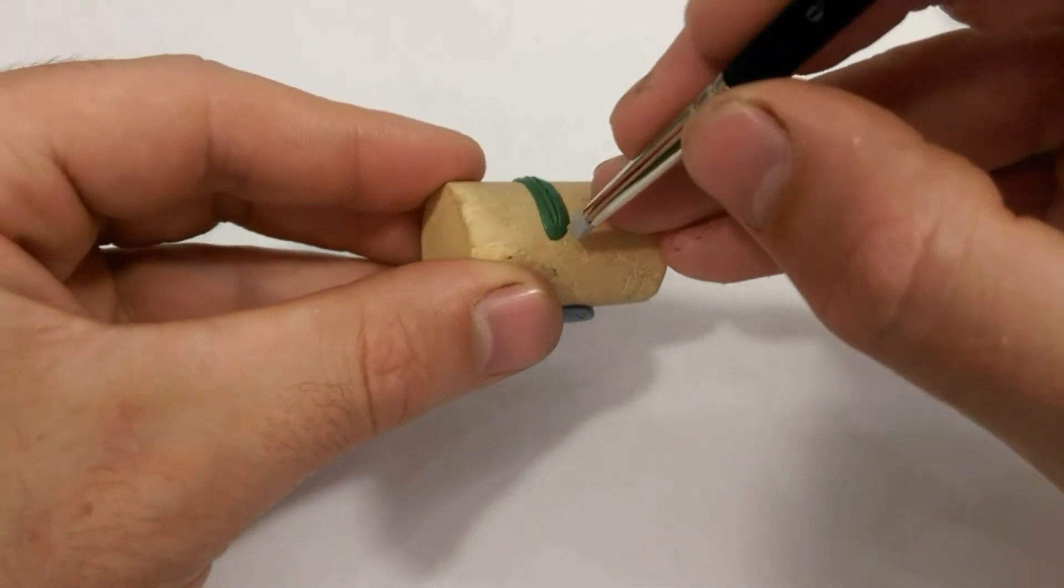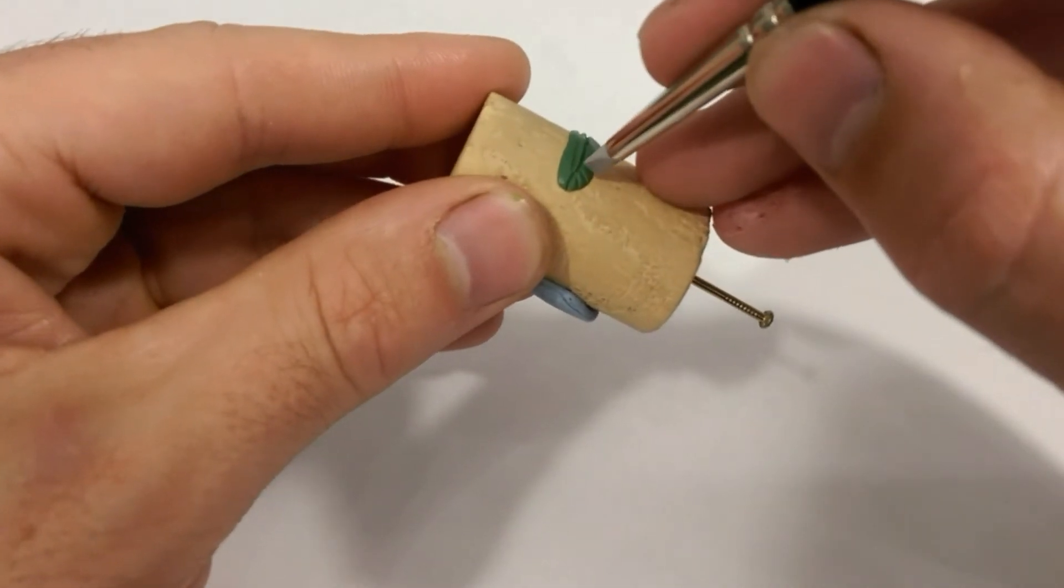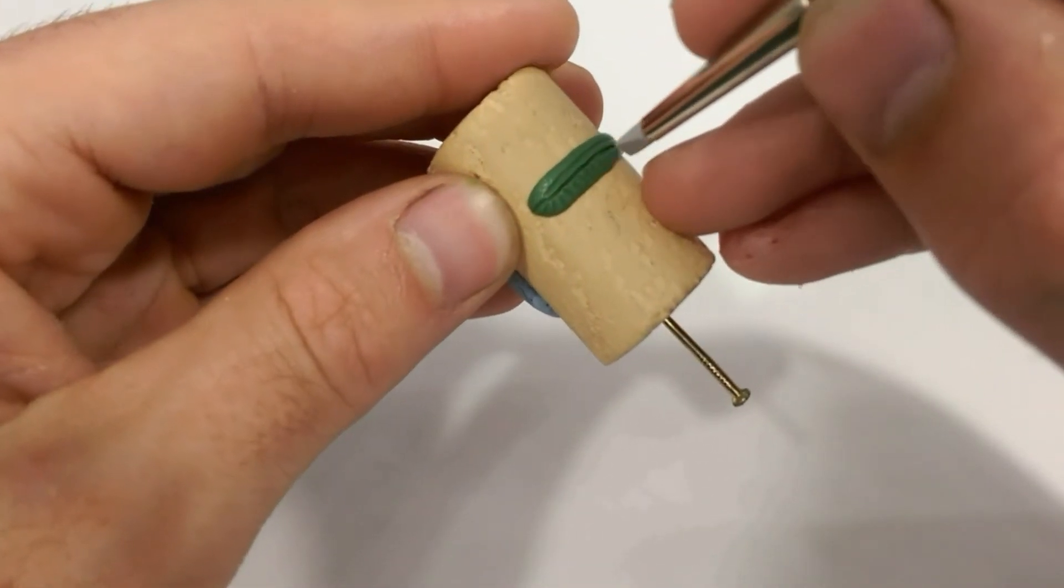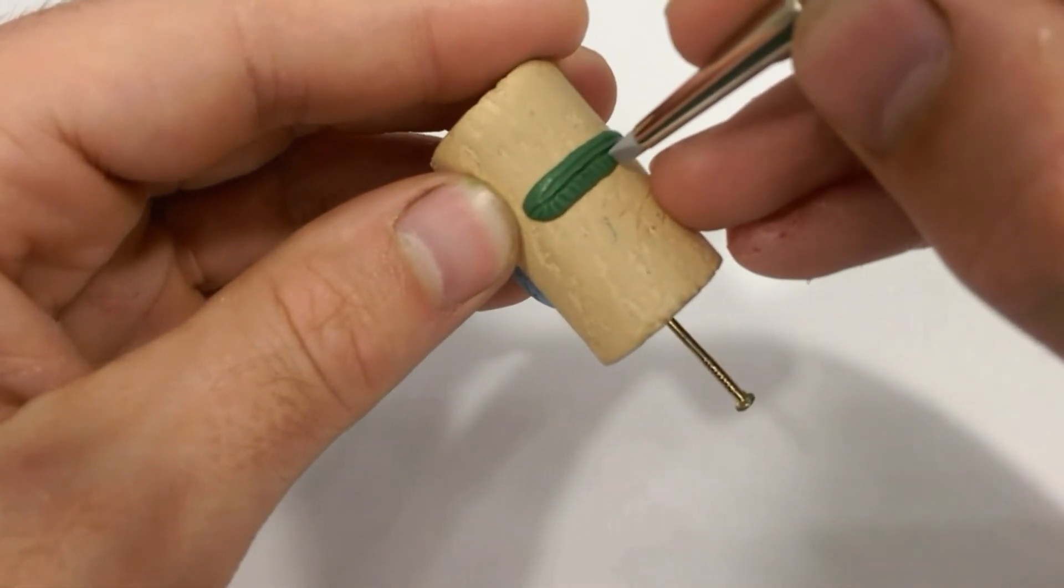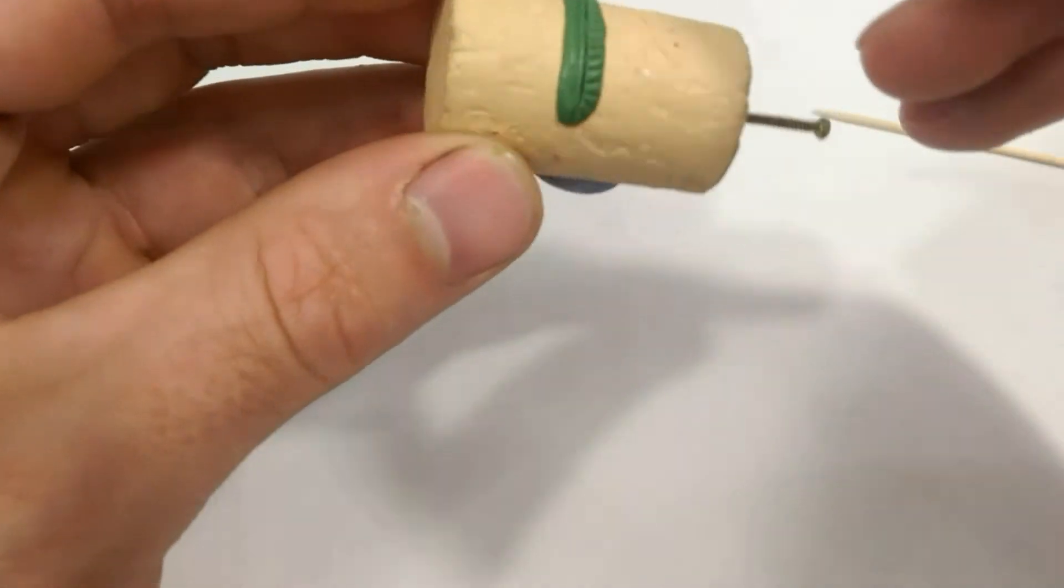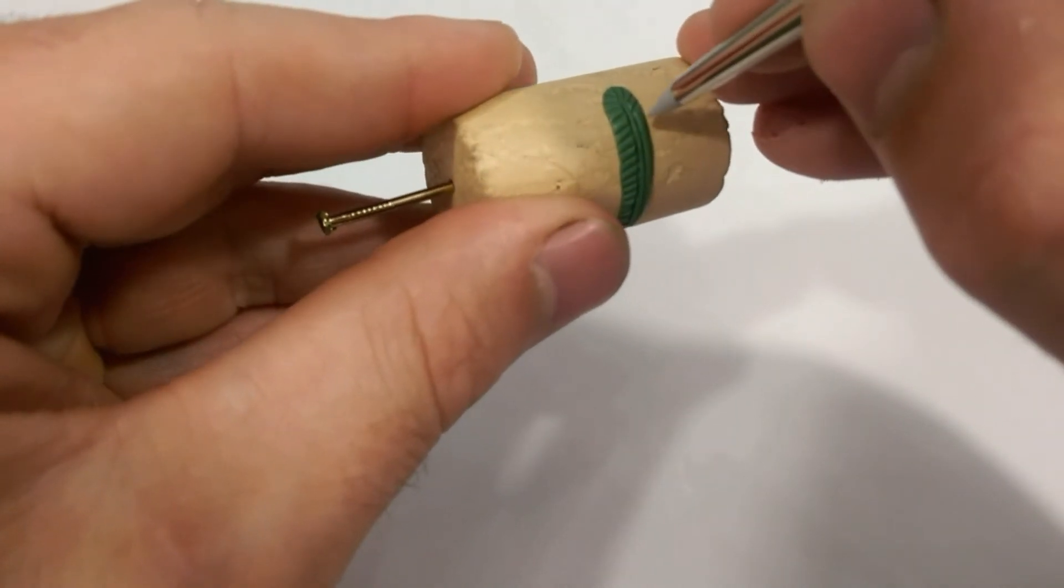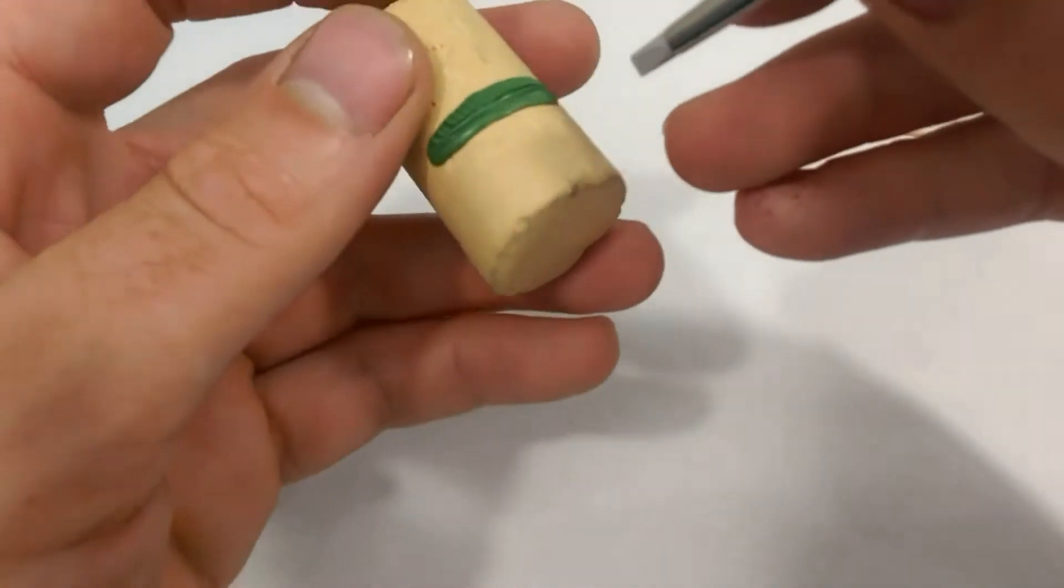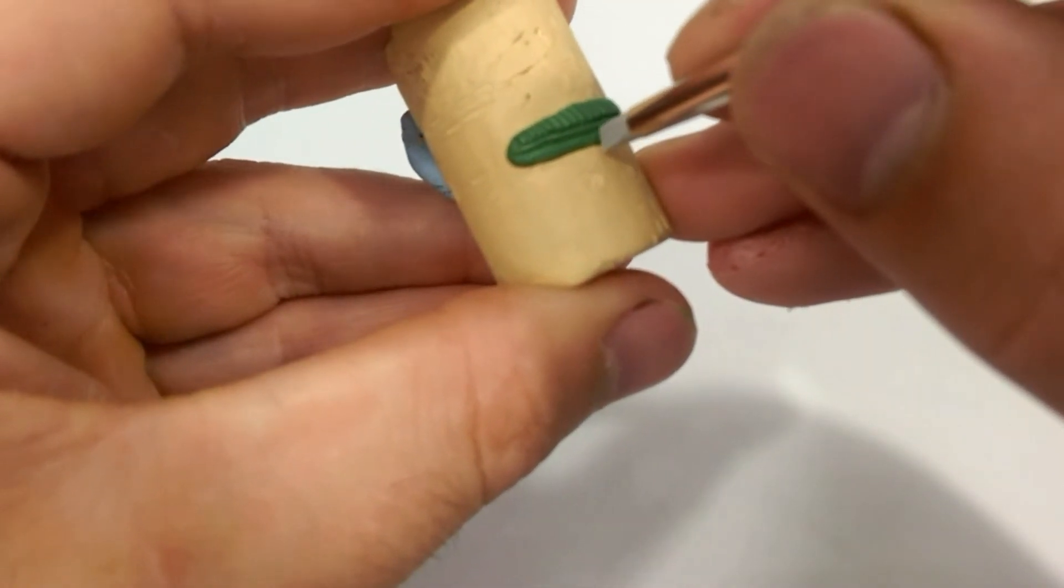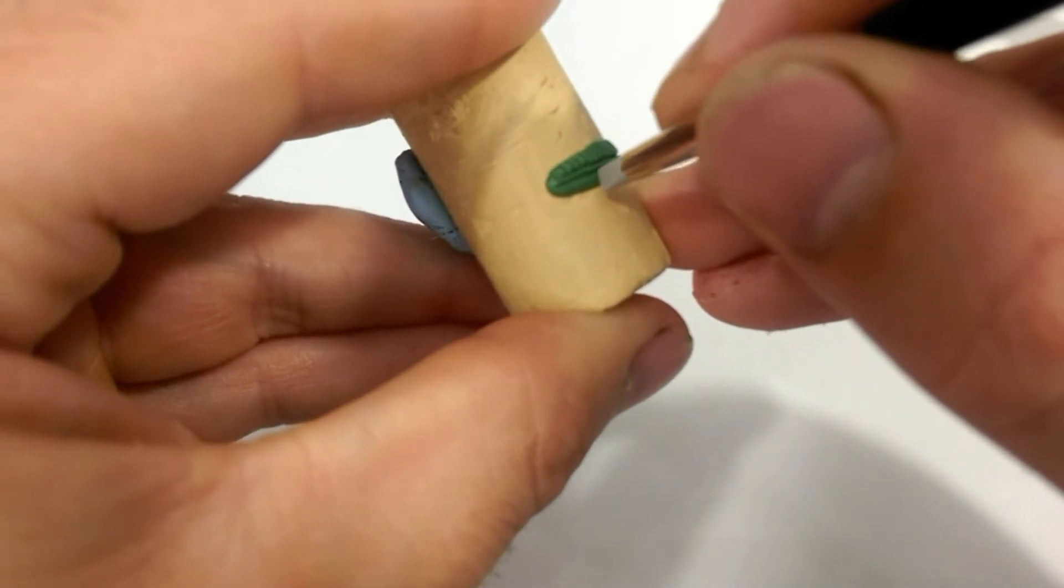From here what I tend to do is try to get some idea of the direction of flow of the actual fibrous bits of the feather that make up the flat edge.